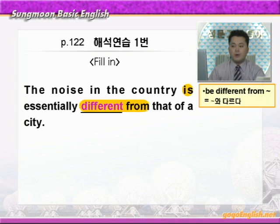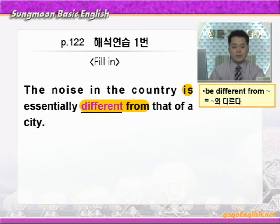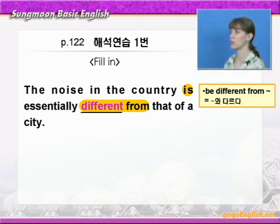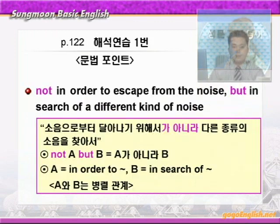is와 different from에 동그라미 쳐보세요. 'be different from' 하면 '뭐뭐와 다르다' 이런 뜻이 됩니다. 그럼 정답을 넣어서 다시 한 번 더 들어보죠. 'The noise in the country is essentially different from that of a city.'